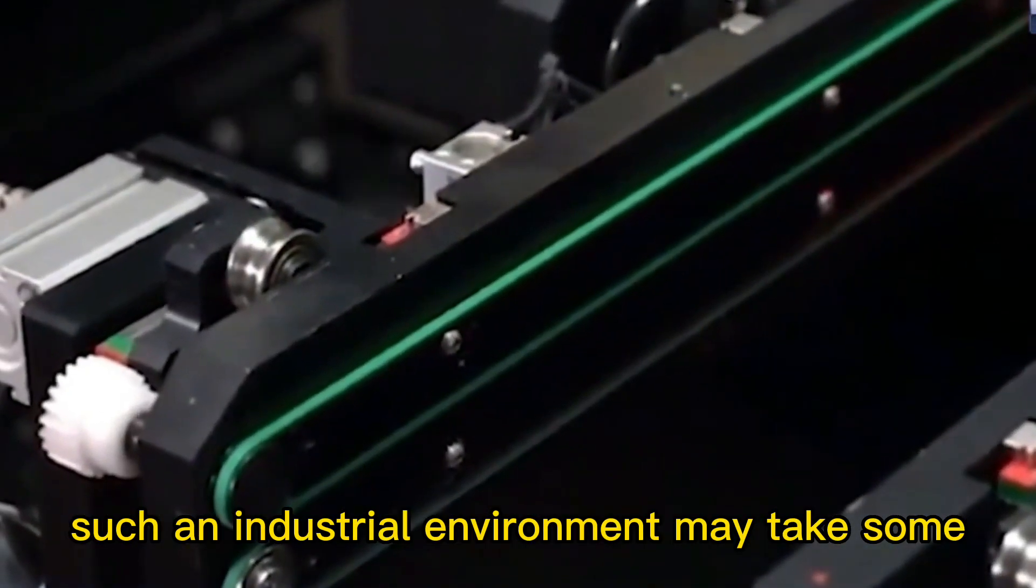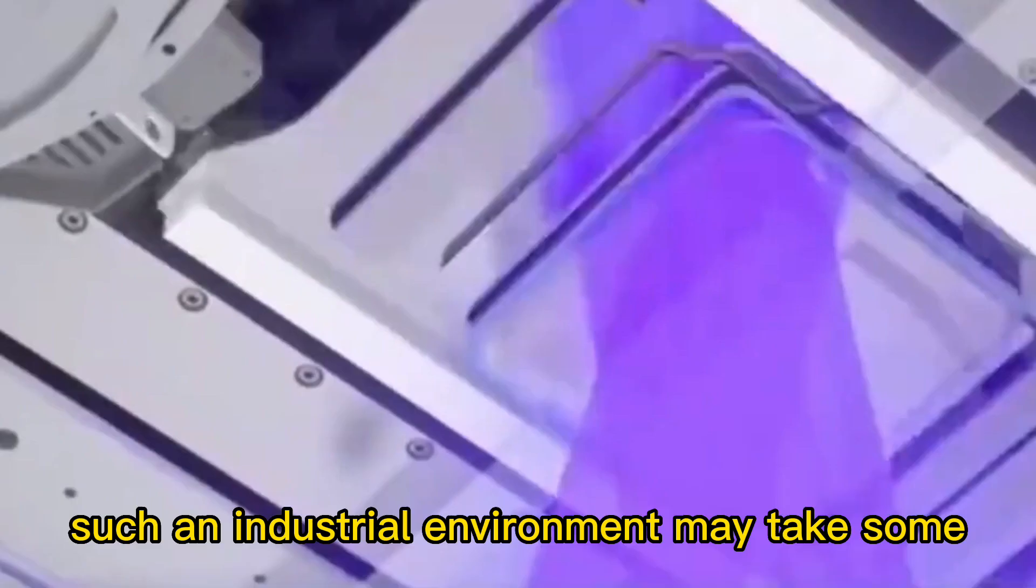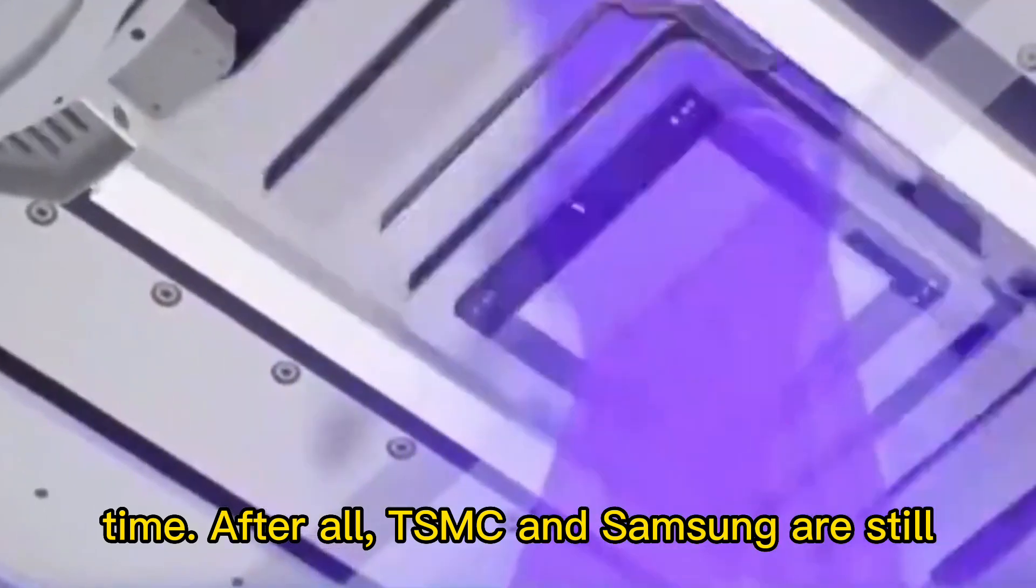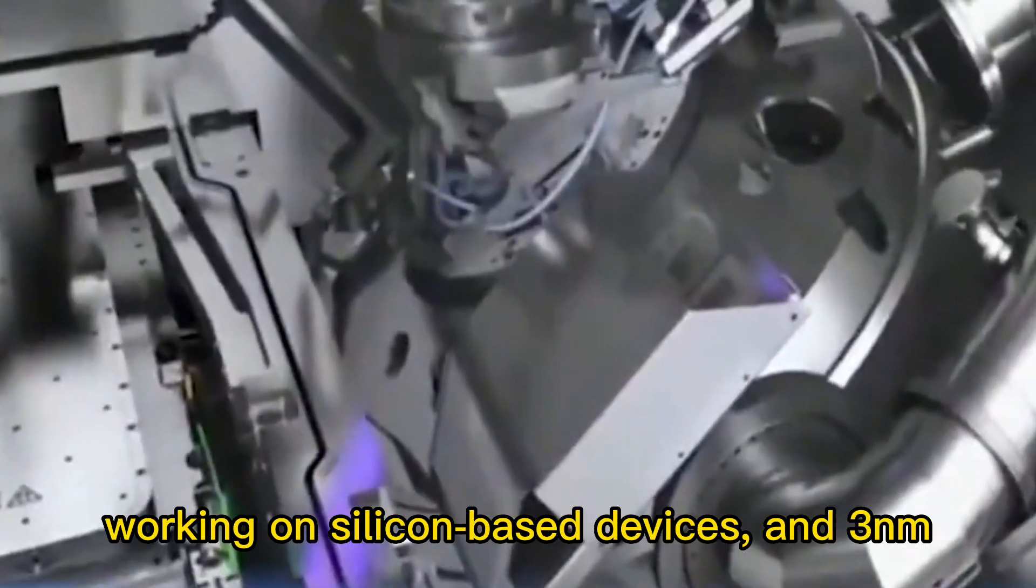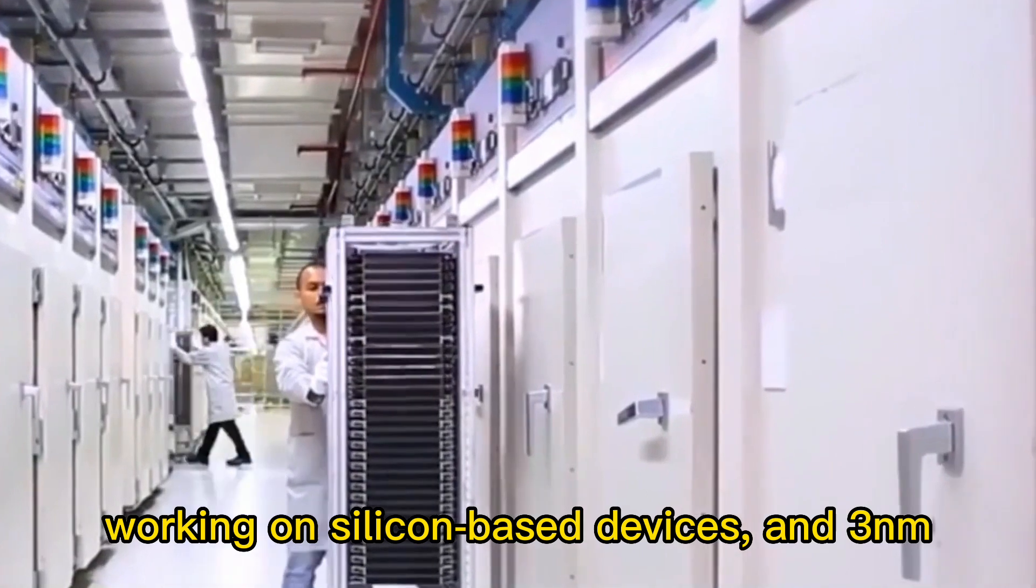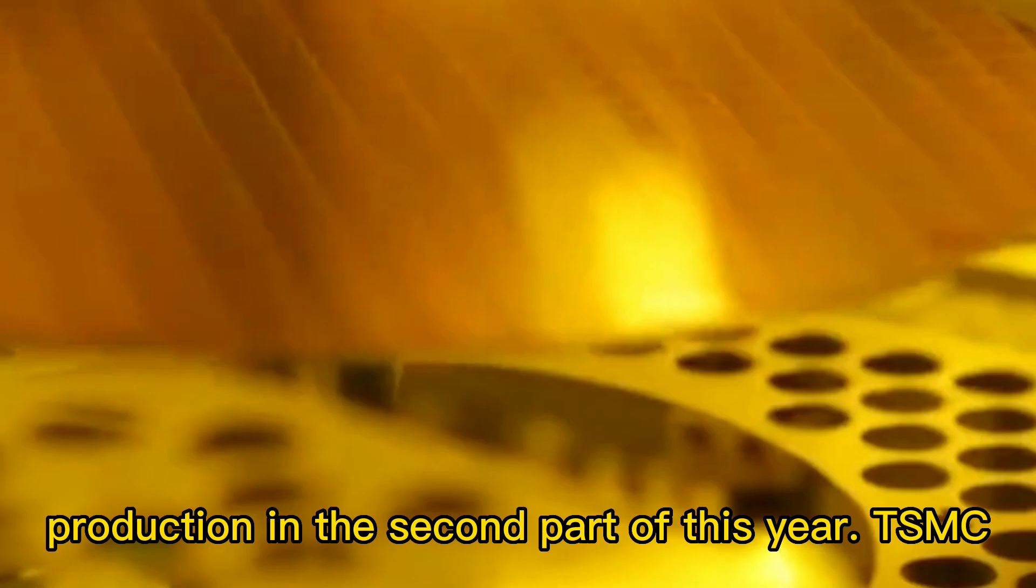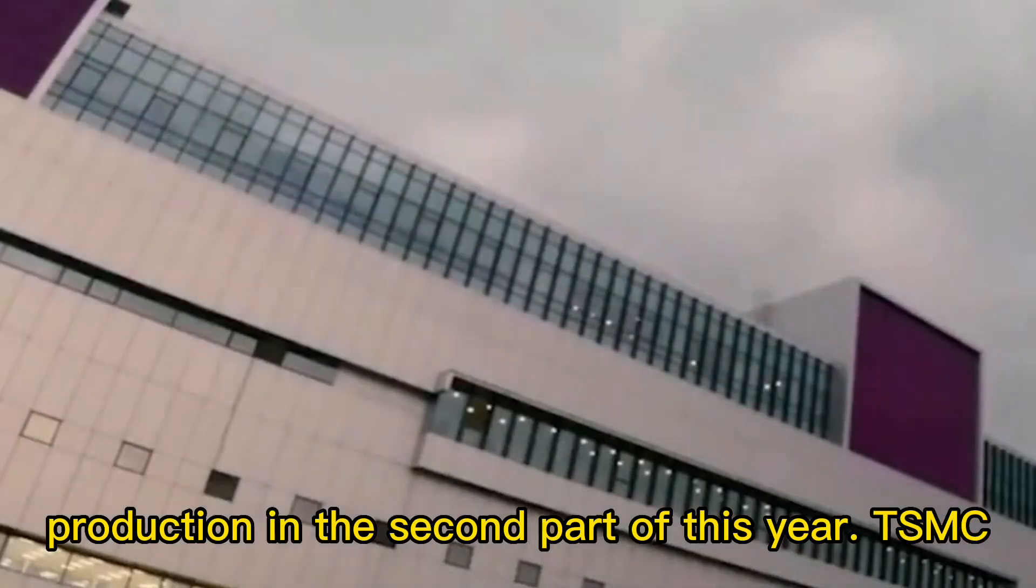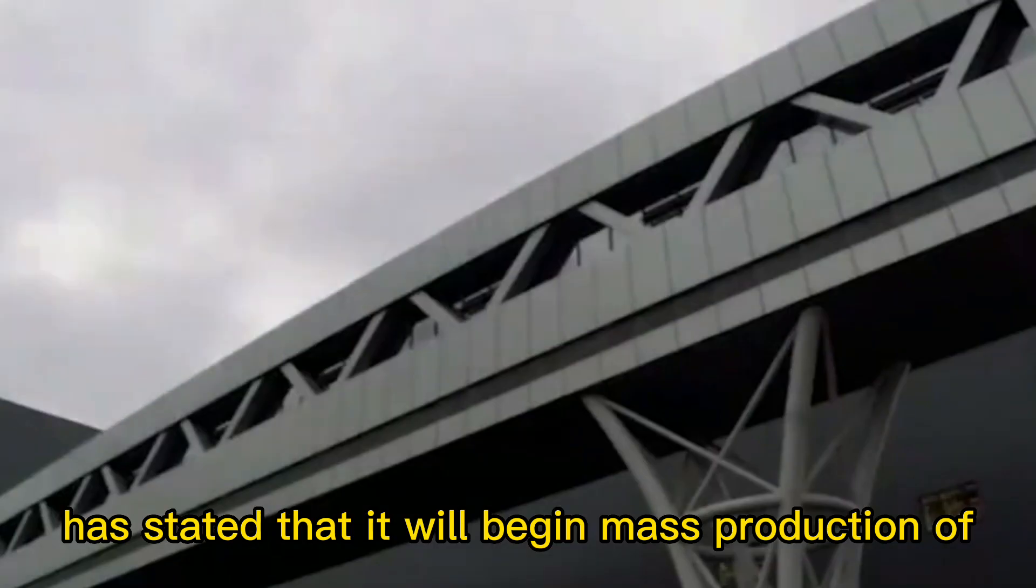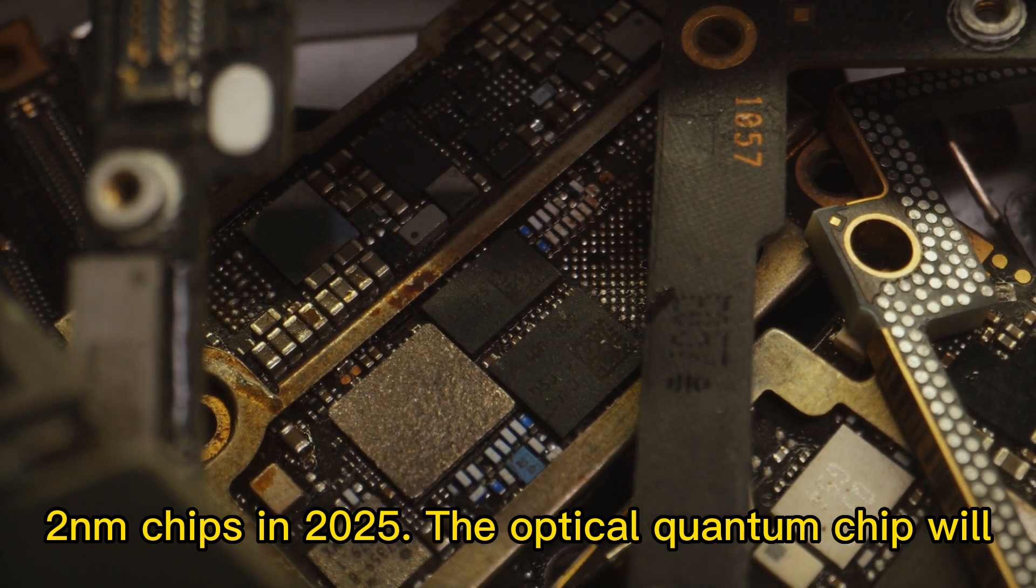Of course, seeing such an industrial environment may take some time. After all, TSMC and Samsung are still working on silicon-based devices, and 3 nanometers process chips are expected to go into full production in the second part of this year. TSMC has stated that it will begin mass production of 2 nanometers chips in 2025.